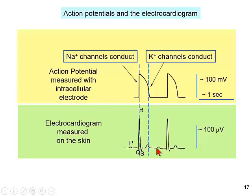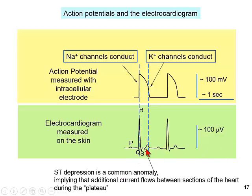One of the most common anomalies in the heartbeat is depression between the S and the T waves, called ST depression. It implies that additional current flows between sections of the heart during the plateau, meaning the heart is using more energy, and it's sometimes not a good thing. Because the EKG is so far removed from the actual events in the heart, it is just an indicator, not a predictor, of heart trouble.